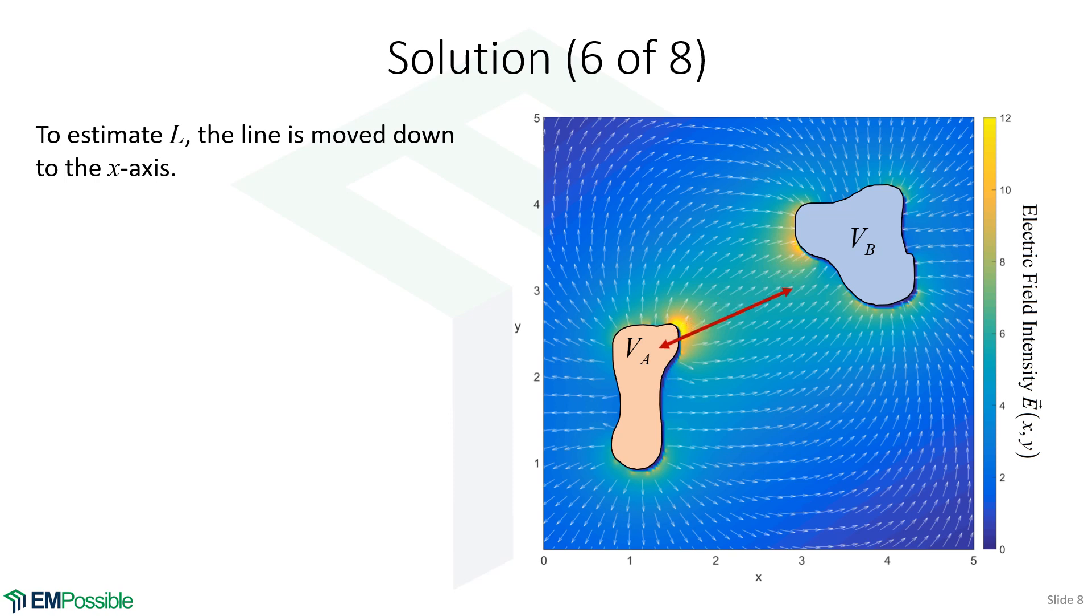So let's estimate L. Visually, we can take this path and just move it down to the x-axis so we can see how big it is. And lining that up, it looks roughly 1.7. At 1.7 what? We haven't written the units here, so let's call this meters.